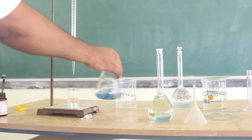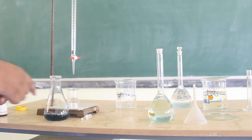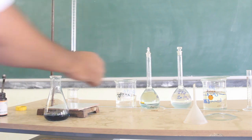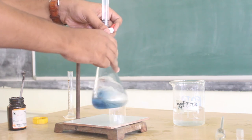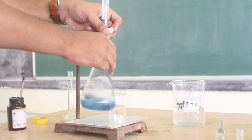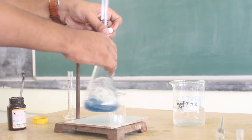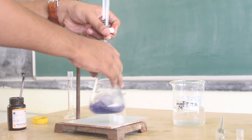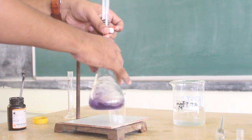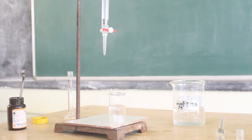Let us start the titration. The solution is titrated against our zinc sulfate solution taken in a different burette. The end point of this titration is deep blue to wine red. Let us start — you can observe that the solution has turned into wine red, so this is the end point of the solution. We have obtained wine red from deep blue. The Trial 1 reading was found to be 6.5.